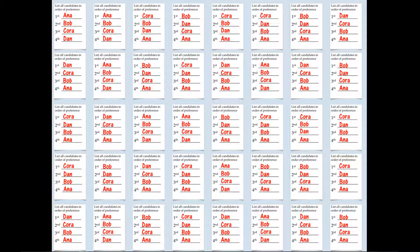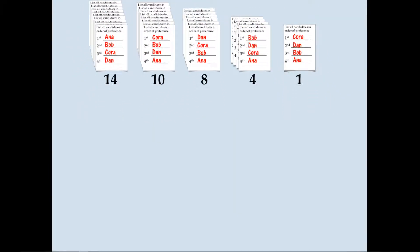Once the voters cast their votes, we compile the ballots into piles of similar ballots. For example, the first pile represents those who preferred Anna first, then Bob, then Cora, and then Dan in that order. Another pile of 10 voters preferred Cora, Bob, Dan, and then Anna last. Let's say the distribution was 14 people in the first pile, then 10, 8, 4, and 1.